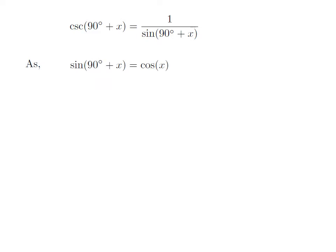As we know, the trigonometry identity sin of 90 degrees plus x is equal to cosine of x. The proof of this trigonometry identity has been explained in the video appearing in the upper right corner. The URL of the video has also been mentioned in the description section. Let's apply the above identity in the above expression of cosecant of 90 degrees plus x.